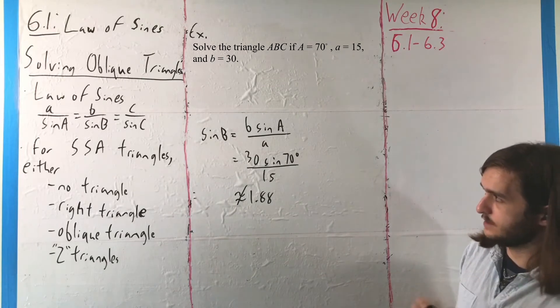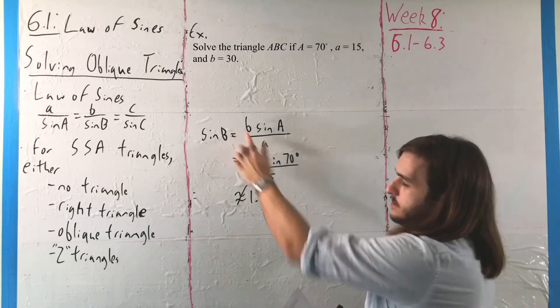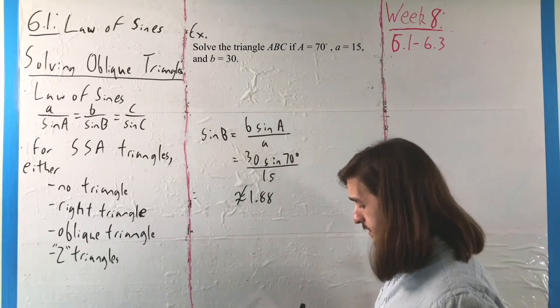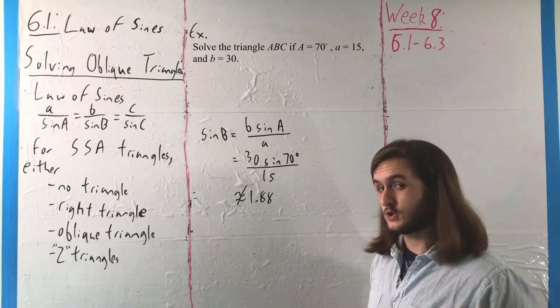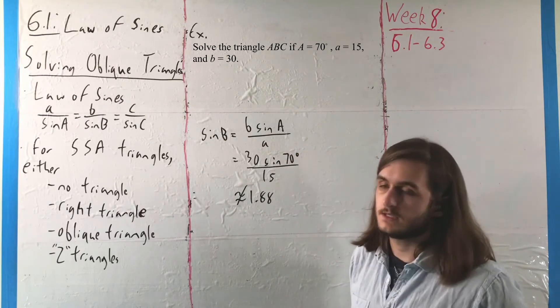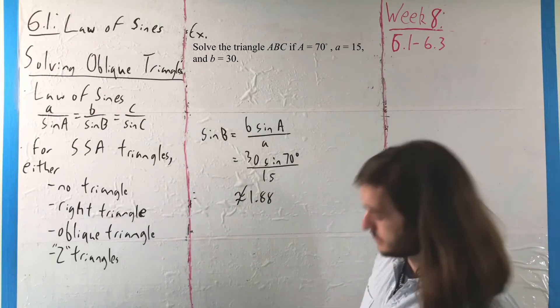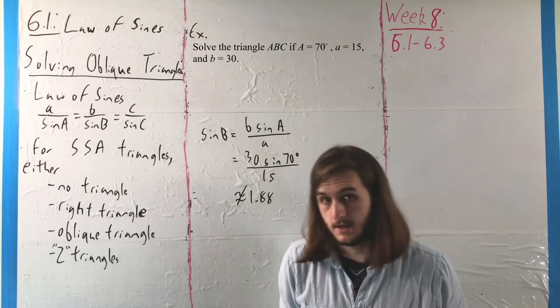That is to say, this triangle cannot happen because our values for A and B have the incorrect arrangement. A is too small to properly form a triangle. So this is the case where nothing gets formed.